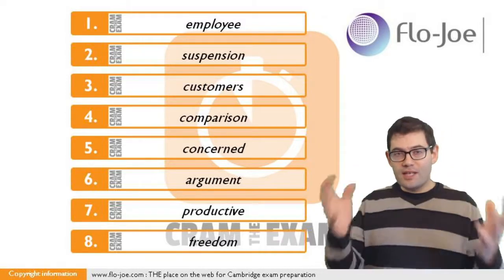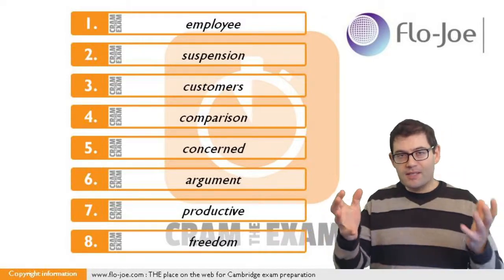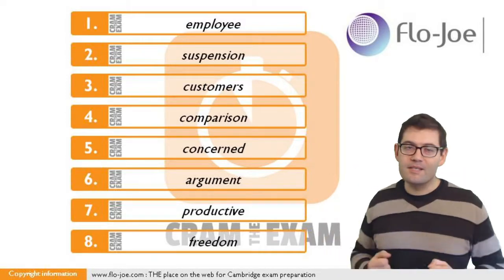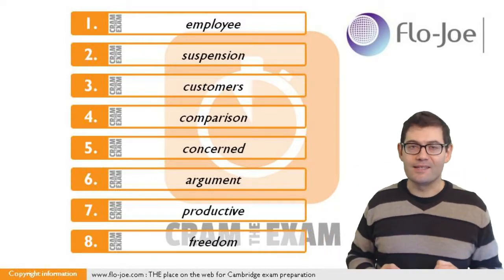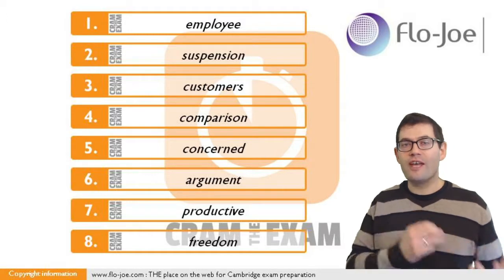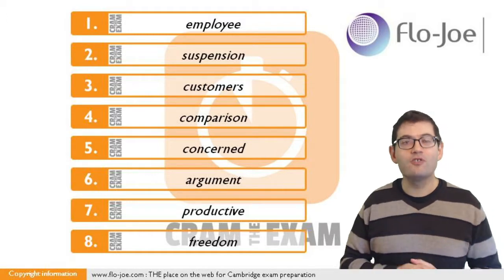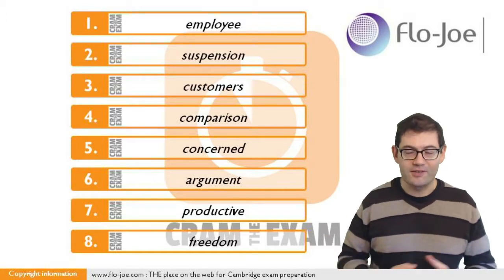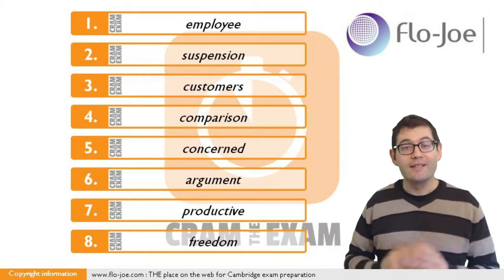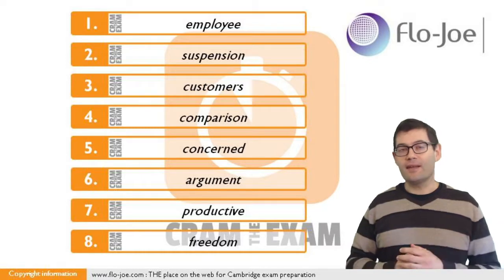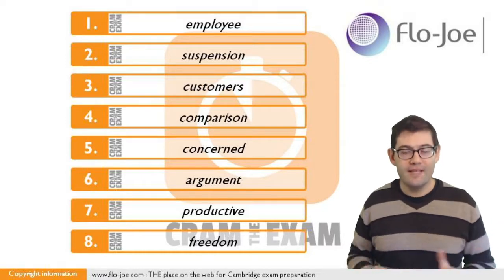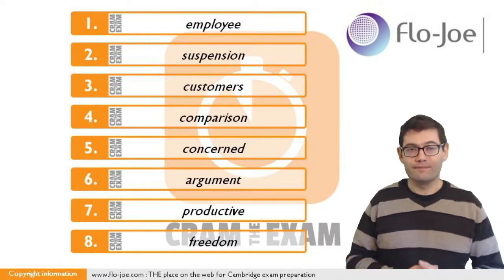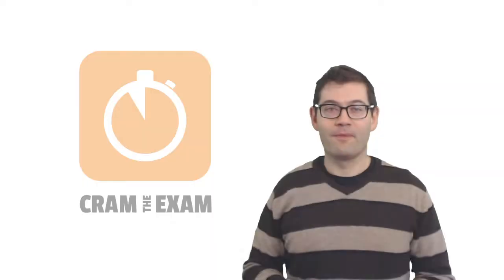Just as there was an easy way to begin the exercise, there's an easy way to end it. Before the gap we've got an article but no noun to which it refers, so we need a noun here. The answer is: freedom.